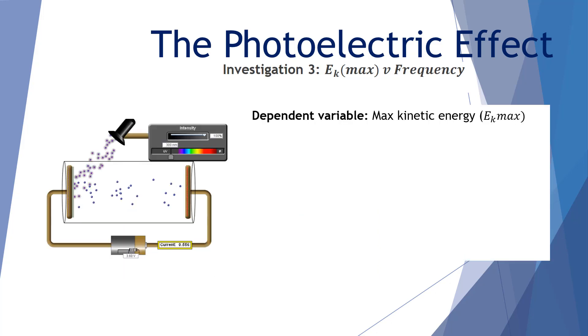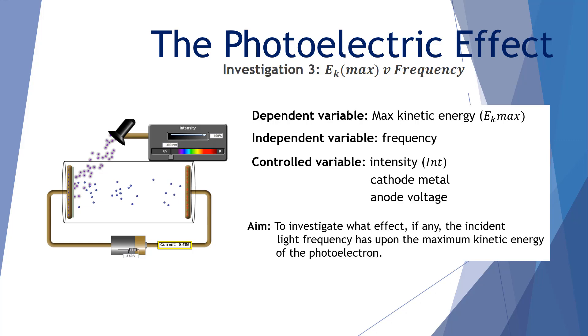For this investigation, our dependent variable is the maximum kinetic energy of photoelectrons EK max. Our independent variable is the frequency of the incident light. Our controlled variables are the intensity of light, the cathode metal, and the anode voltage. Our aim is to investigate what effect, if any, the incident light frequency has upon the maximum kinetic energy of the photoelectron.